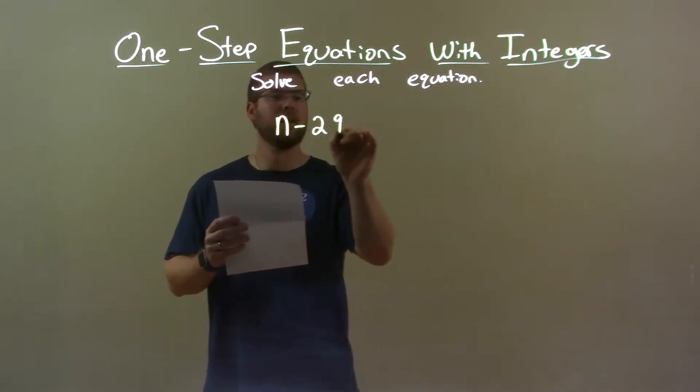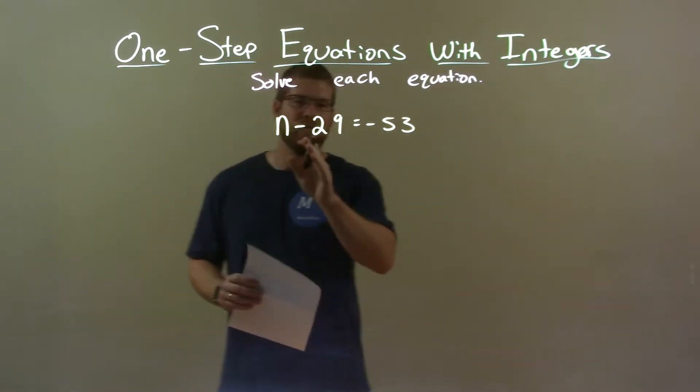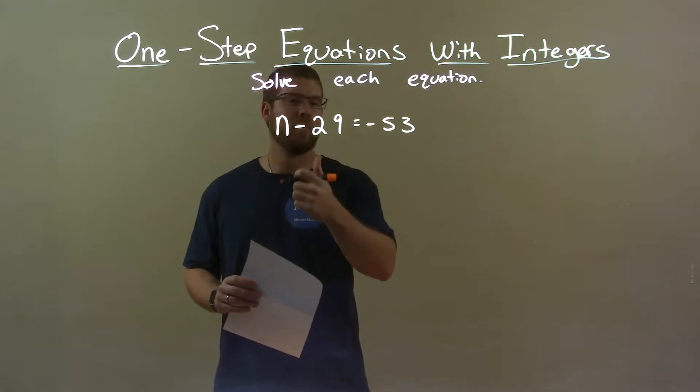n minus 29 equals negative 53. We want to get n by itself. It's being subtracted by a 29, so I want to bring that over to the right.